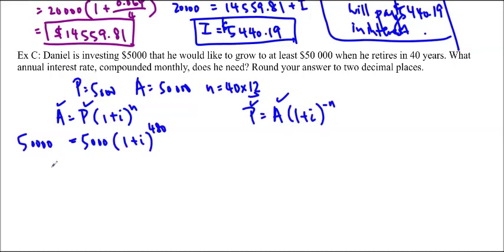And we divide. So, this equals 10. So, 10 equals 1 plus I to the 480. And, as usual, if we are trying to get rid of an exponent, we're going to 480th root it.